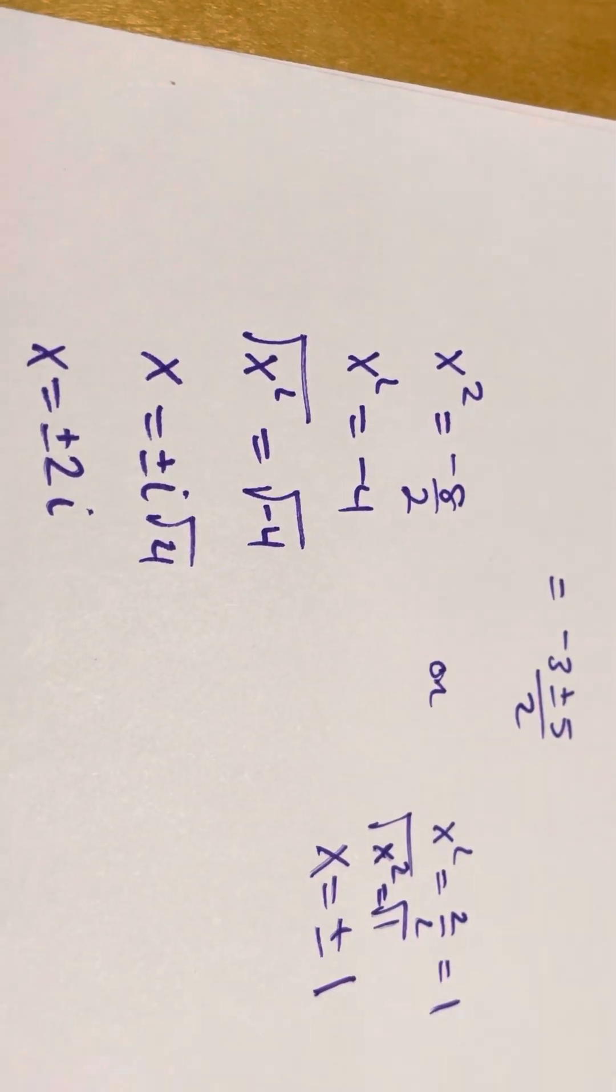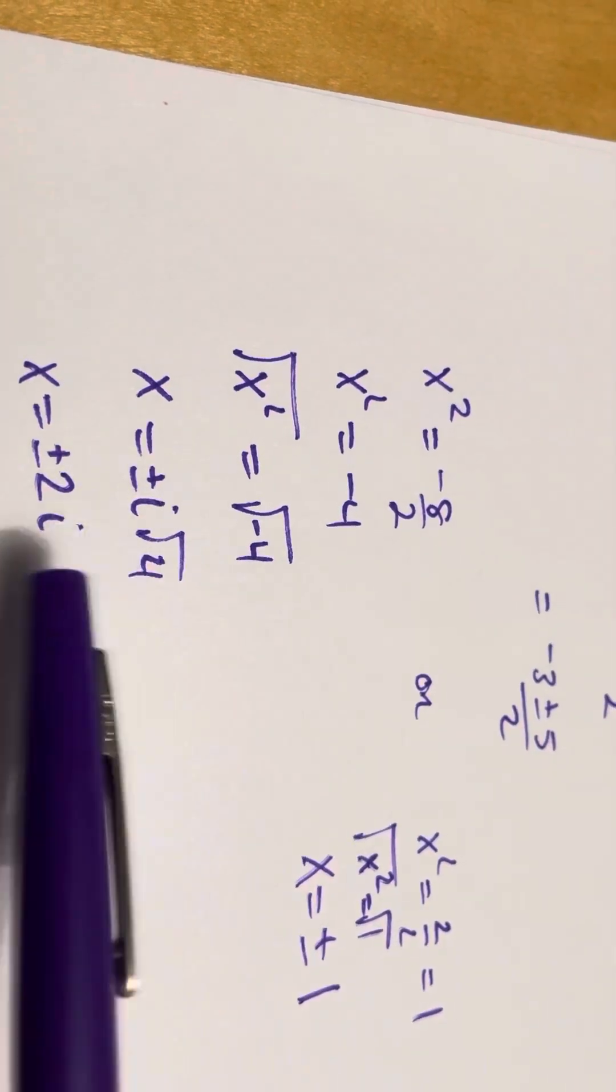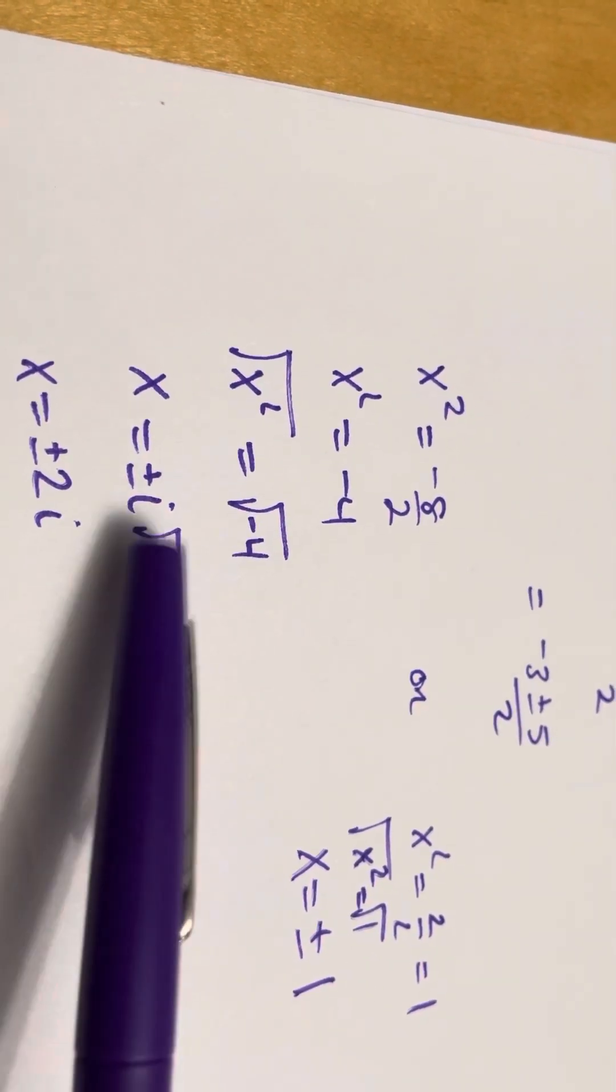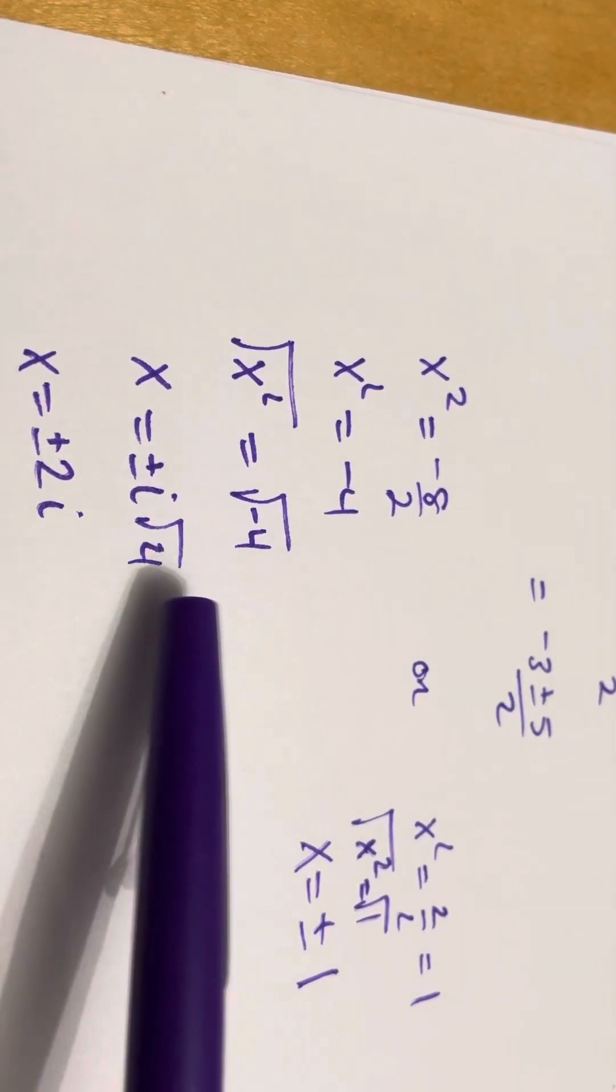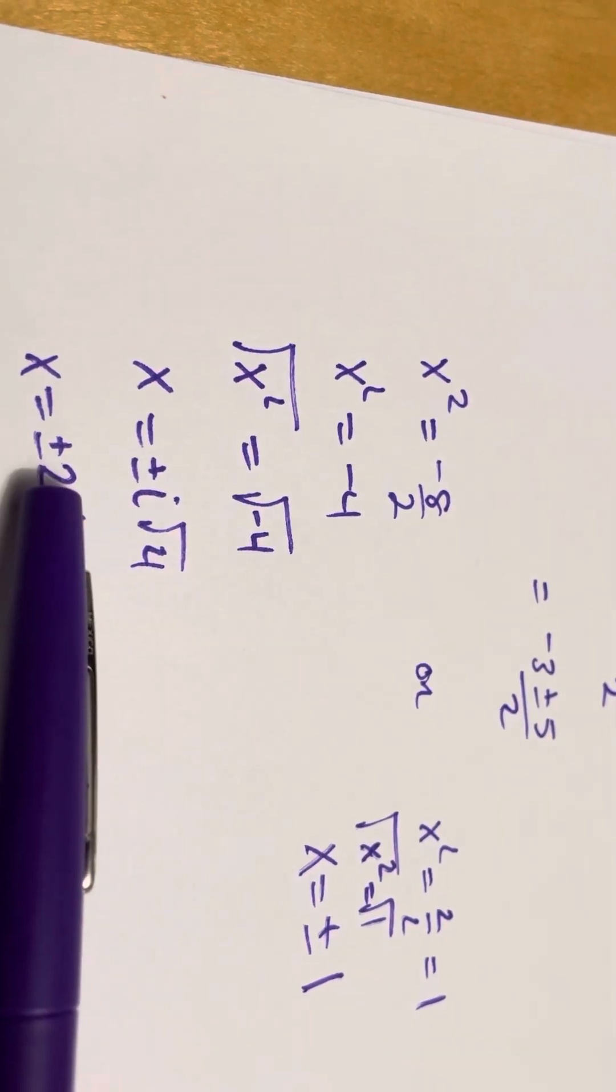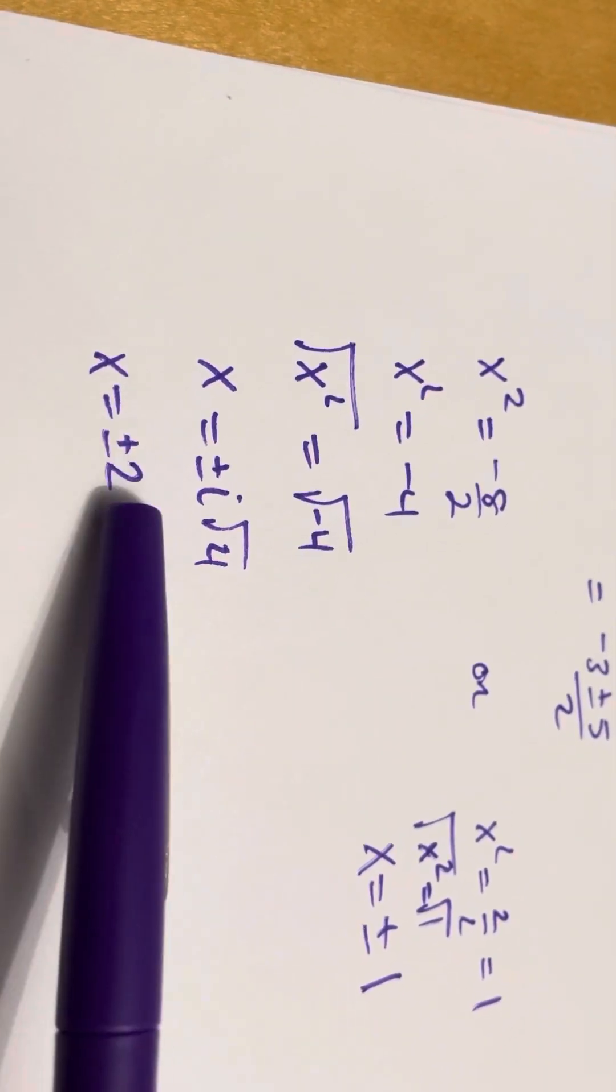And the i is indicating that we have a complex number. And we take the square root. Remember, we're going to need plus or minus. Now, 4 has a square root, which is 2. So, this becomes plus or minus 2i.